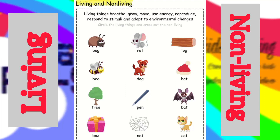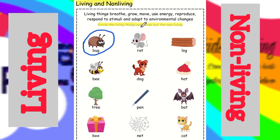Here is living and non-living things. Circle the living things and cross the non-living things. First is bug — bug is a living thing because it can move and breathe. Next is ray, because it also can breathe and move.